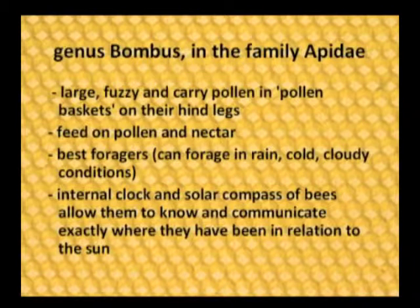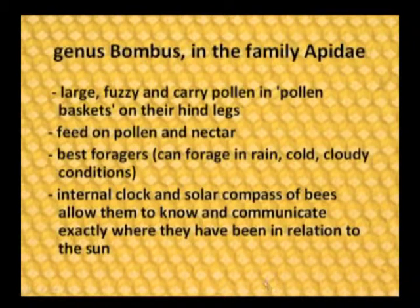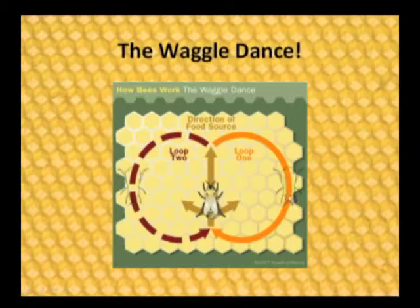Bumblebees have an internal clock and solar compass, so they can communicate with other bees in their colony to tell exactly where they have been in relation to the colony. Due to the sun and their internal clock, they can indicate how long it was, so they know exactly what plants they have reached. Bees also communicate through dancing — it's called the waggle dance.